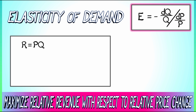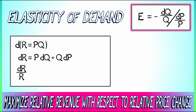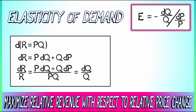Given that relation, we can implicitly differentiate. Applying that derivative, we get dr equals, by the product rule, p dq plus q dp. To get the relative rate of change, let's divide through both sides by r, which being p times q gives us dr over r equals p dq plus q dp divided by p times q. There's some cancellation and simplification — we get that this equals dq over q, the relative rate of change of quantity, plus dp over p, the relative rate of change of price.